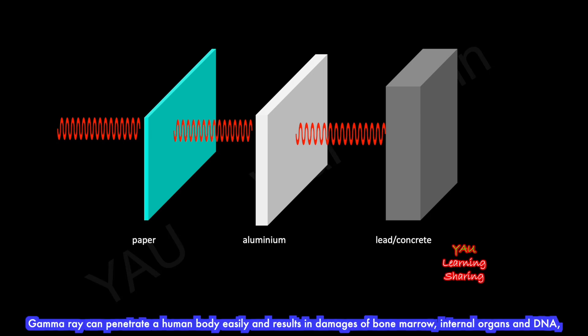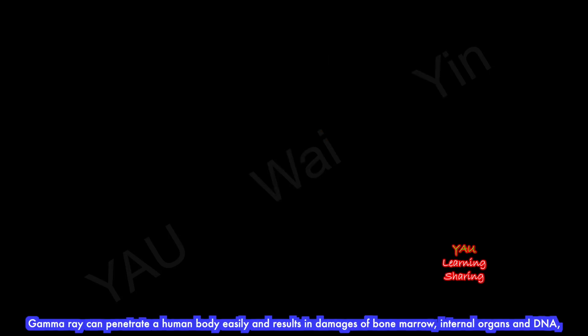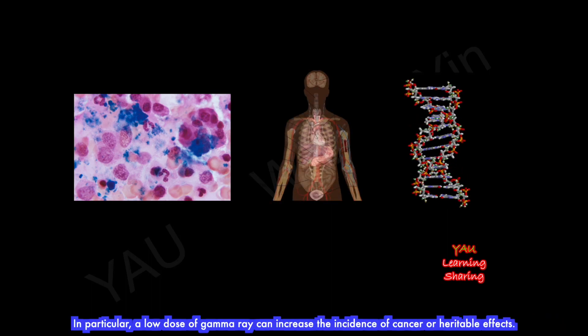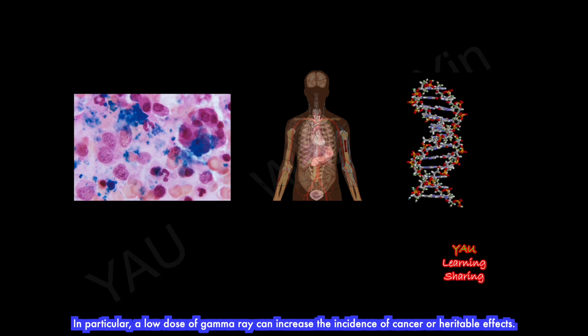Gamma-rays can penetrate the human body easily and result in damage to bone marrow, internal organs, and DNA. In particular, low doses of gamma-rays can increase the incidence of cancer or heritable effects.